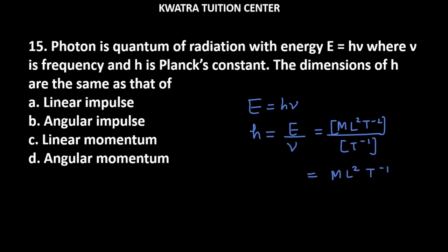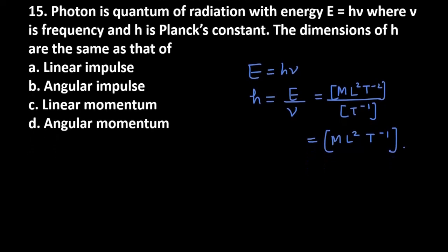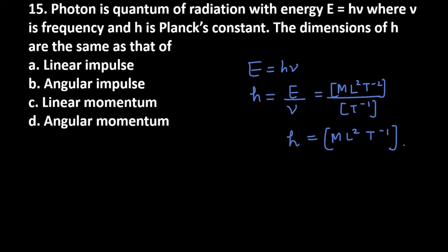So the dimension of h is ML² T⁻¹. Now we need to find which option has the same dimensions as Planck's constant. First, let's check linear impulse.